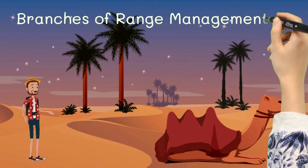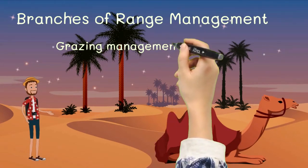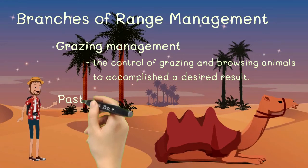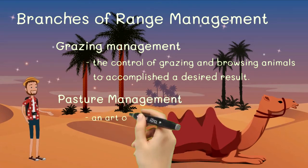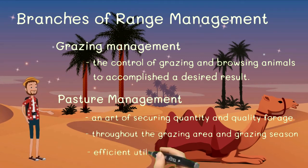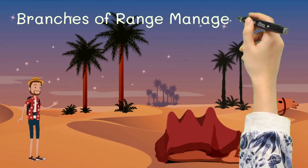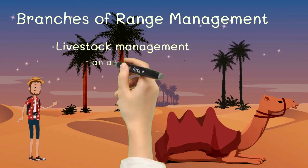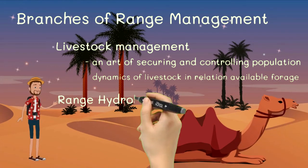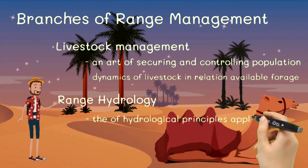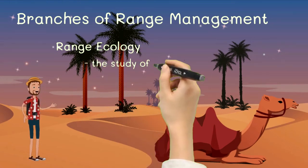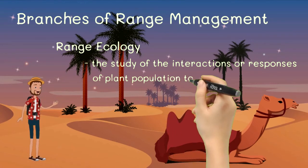We have several branches of range management. Grazing management means the control of grazing and browsing animals to accomplish the desired result. Pasture management is the art of securing the maximum quantity of nutritious and digestible plants distributed as widely as possible over the grazing season and ensuring the efficient utilization of forage produced. Livestock management is the art of securing and controlling the number and kinds of livestock and their distribution in relation to the availability of forage. Range hydrology is the study of hydrological principles as applied to range ecosystems. And range ecology refers to the study of interactions or the response of plant populations to their environment.